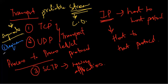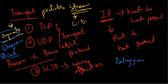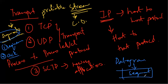Each segment includes a sequence number for reordering and an acknowledgement number (ACK) for segments received. Segments are carried across the internet inside IP datagrams — the datagram contains the segment inside it. At the receiving side, the receiver takes the sequence number, places the segment in order, and acknowledges it using the acknowledgement number.